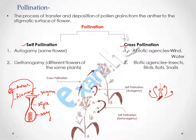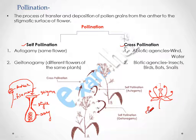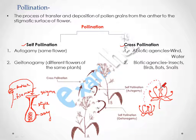In geitonogamy, pollination occurs between different flowers of the same plant. The transfer of pollen takes place from the anther of one flower to the stigmatic surface of another flower, but both flowers belong to the same plant.